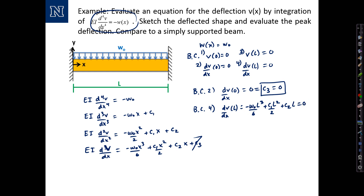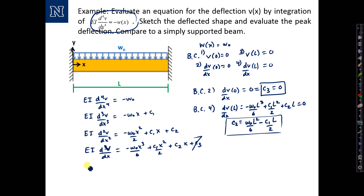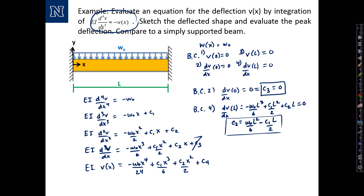We can't solve for either C1 or C2 individually, but we can write a relationship between the two. Solving for C2 in terms of C1: C2 equals W-naught·L²/6 minus C1·L/2. We'll save that for future use. Now integrating one more time: EI·V(x) equals negative W-naught·x⁴/24 plus C1·x³/6 plus C2·x²/2 plus another constant of integration C4.